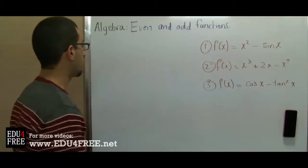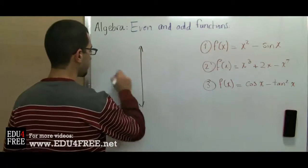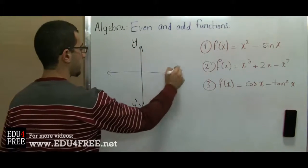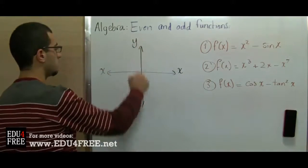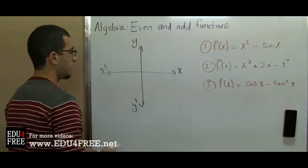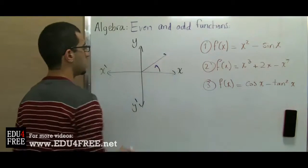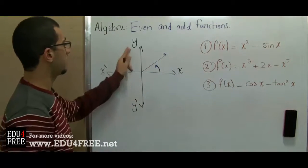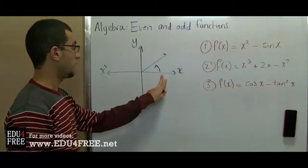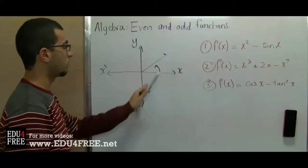We also have to remember that in trigonometric functions, the y-axis and x-axis are as shown. If we have an angle, the sine of the angle would be the value of the y-axis, the cosine would be the value of the x-axis, and the tangent is the sine over the cosine.